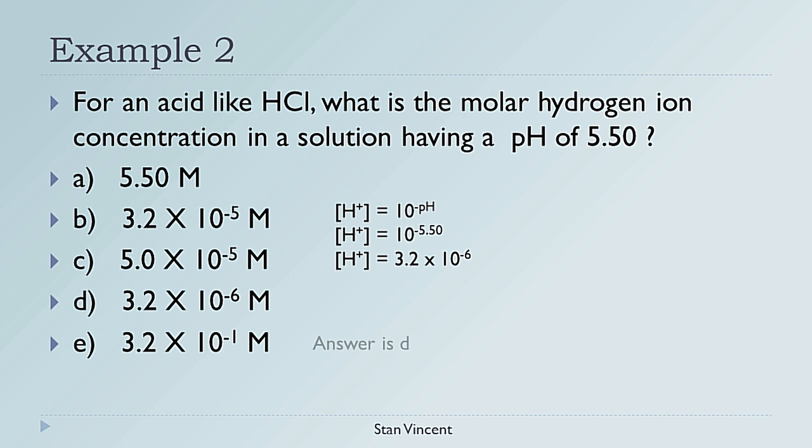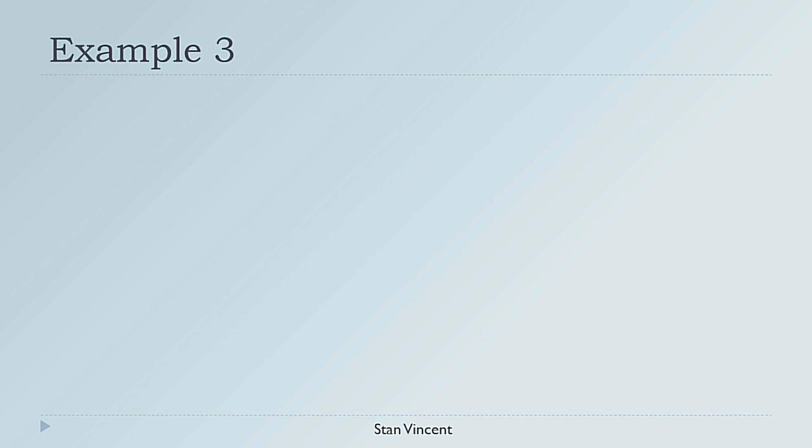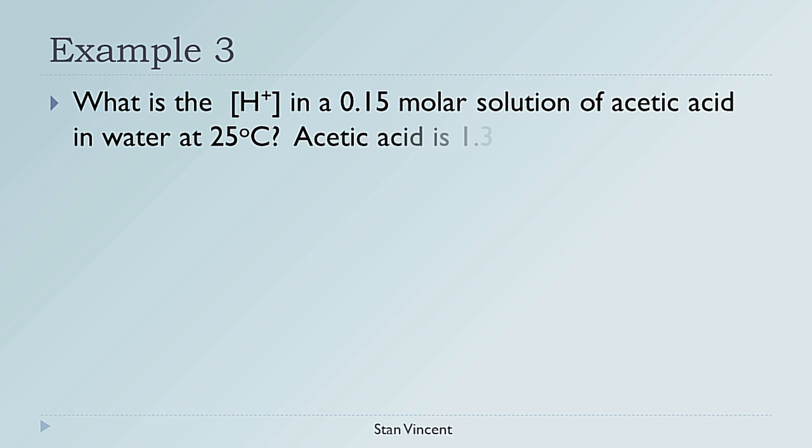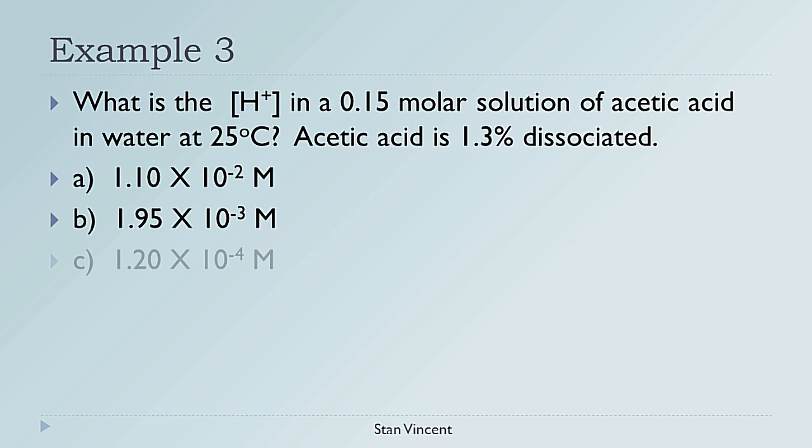Example 3: What is the hydrogen ion concentration in a 0.15 molar solution of acetic acid in water at 25 degrees Celsius? Acetic acid is 1.3 percent dissociated. Pause the video, solve the problem, pick your correct choice from the list, and then compare your solution with the one provided.